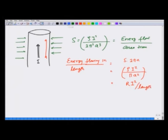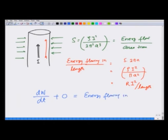Going back to the energy balance equation: since the current is steady, there is no change in electromagnetic energy, so that term is zero. The mechanical energy term dW/dt equals the energy flowing in. From Joule heating, this term is Ri², and the right-hand side also comes out to be Ri². So we have shown that the heat produced in the wire is actually brought in through electromagnetic fields.